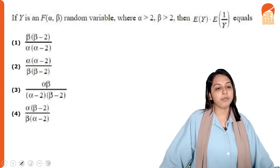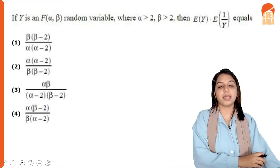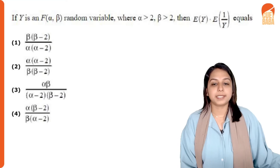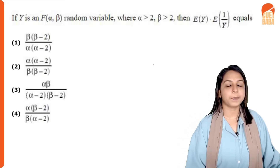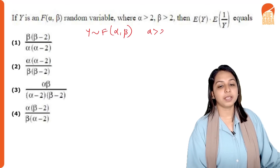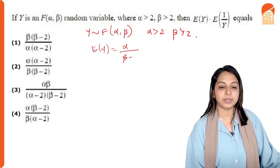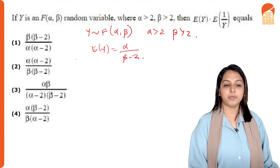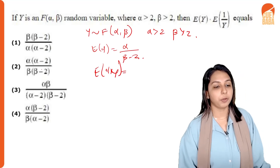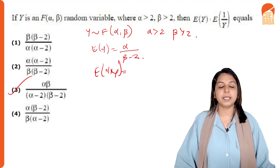If Y follows an F(α, β) distribution with α > 2 and β > 2, find E[Y] · E[1/Y]. For an F-distribution, E[Y] = α/(β − 2). Finding E[1/Y] similarly, the product E[Y] · E[1/Y] equals αβ / [(α − 2)(β − 2)]. Option 3 is the right answer.